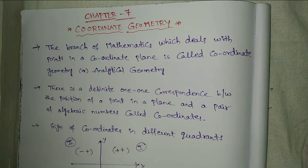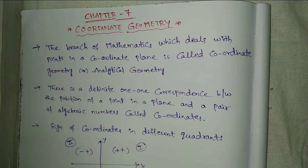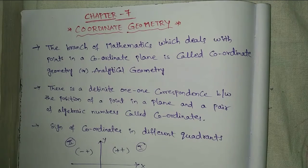Welcome to Rajesh Lekalu. Today our topic is 10th Class Mathematics Chapter 7, Coordinate Geometry. The branch of mathematics which deals with points in a coordinate plane is called Coordinate Geometry or Analytical Geometry.